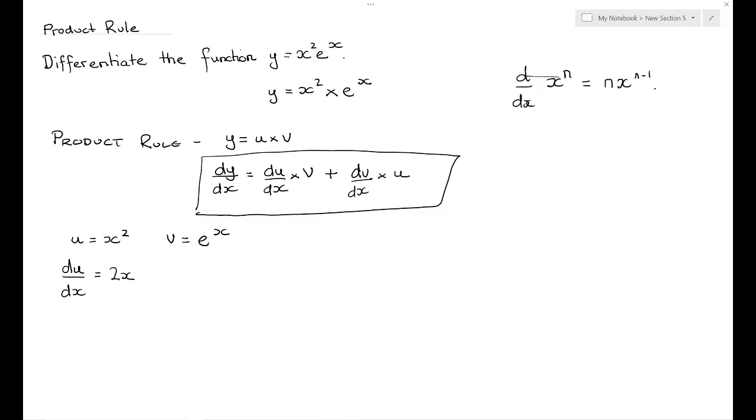Now we want to find dv/dx. So we need to differentiate v, which is e to the x, with respect to x. And you should recall that when we differentiate the exponential function e to the x, it stays exactly the same. So we can say that dv/dx is equal to e to the x.